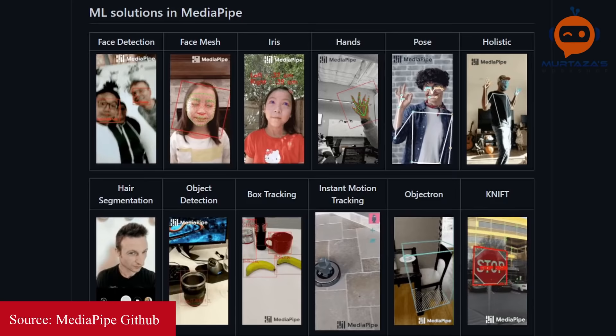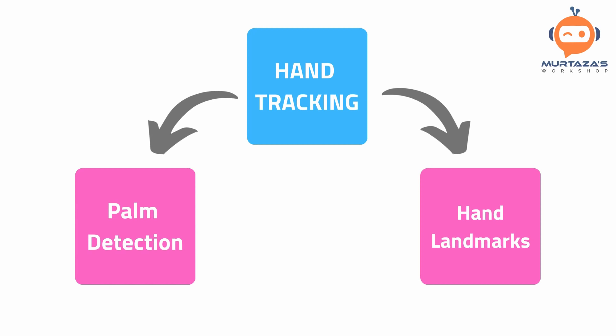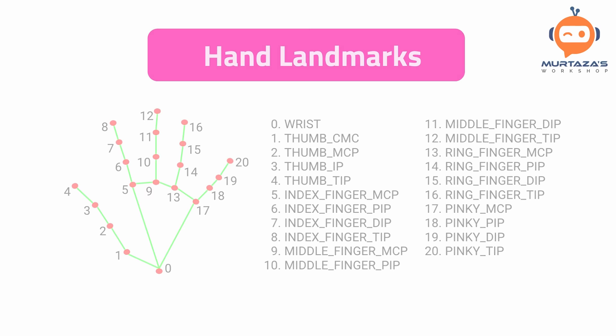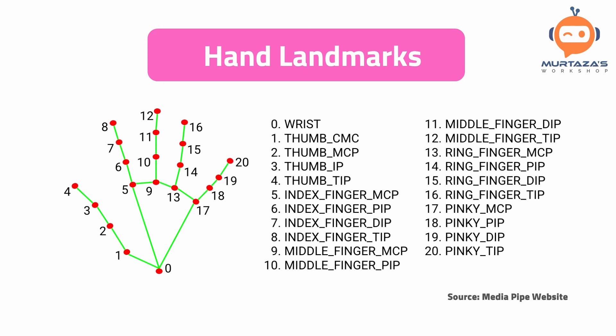The model we are working with today is hand tracking. It uses two main modules at the backend: palm detection and hand landmarks. The palm detection works on the complete image and provides a cropped image of the hand. From there, the hand landmark module finds 21 different landmarks on that cropped image. To train this model, they manually annotated 30,000 images of different hands. This is why it works so well, and it is cross-platform with minimal configuration.